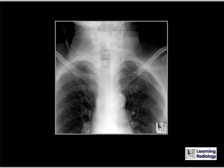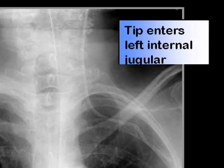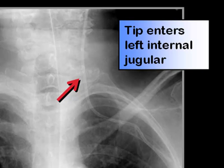Following insertion of a central venous catheter, this image was obtained. The tip of the catheter is in the left internal jugular vein rather than in the superior vena cava where it is intended to be.